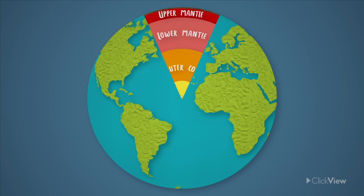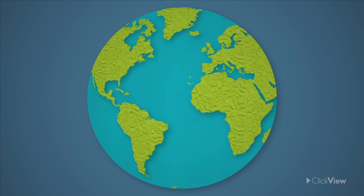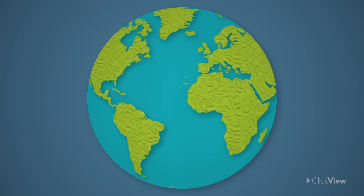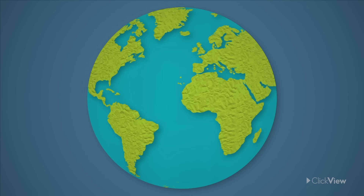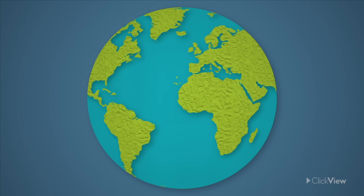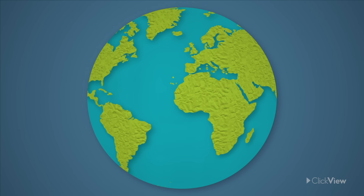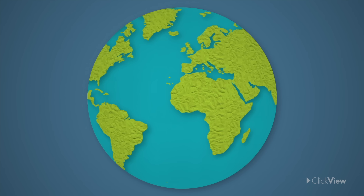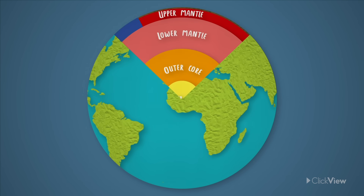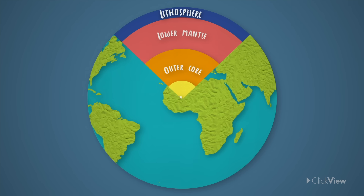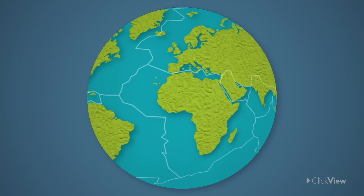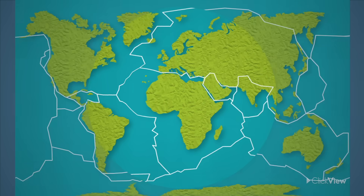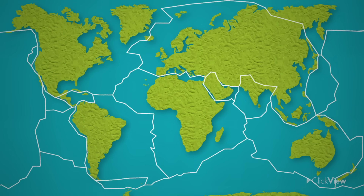If you took a look at a world map, it would be easy to think that the earth has always looked like this and always will. However, this is just how the earth's surface looks currently, because it is changing all the time. Most of these changes happen in the lithosphere. Earth's lithosphere is divided into many tectonic plates that are different in shapes and sizes, but fit tightly together like a jigsaw puzzle.